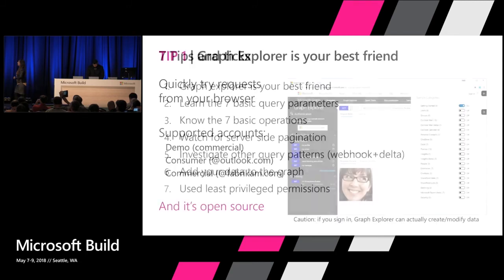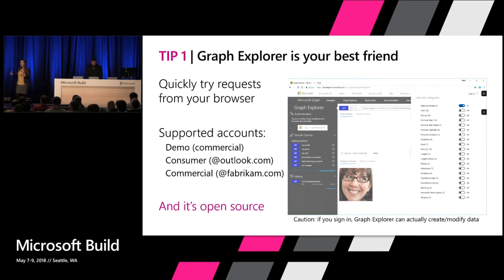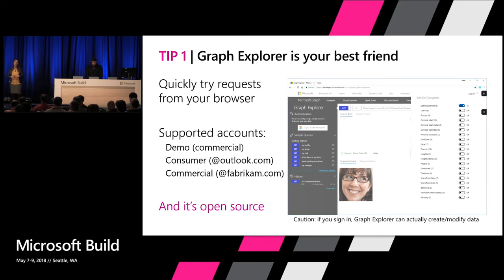Tip number one: Graph Explorer is your best friend. How many of you use things like Postman, Fiddler, or Charles? You can use the Graph Explorer to do a lot of these requests, and it has prepackaged requests with pointers to the documentation. One thing I want to call out is that the Graph Explorer is open source — if you'd like to contribute or see new functionality, send us a pull request.